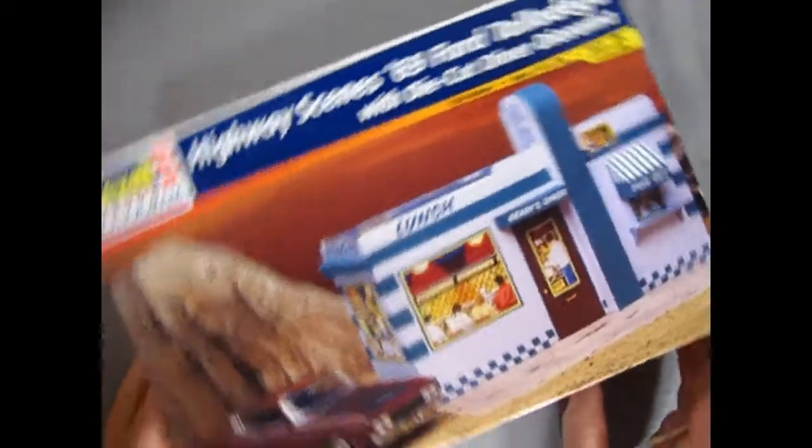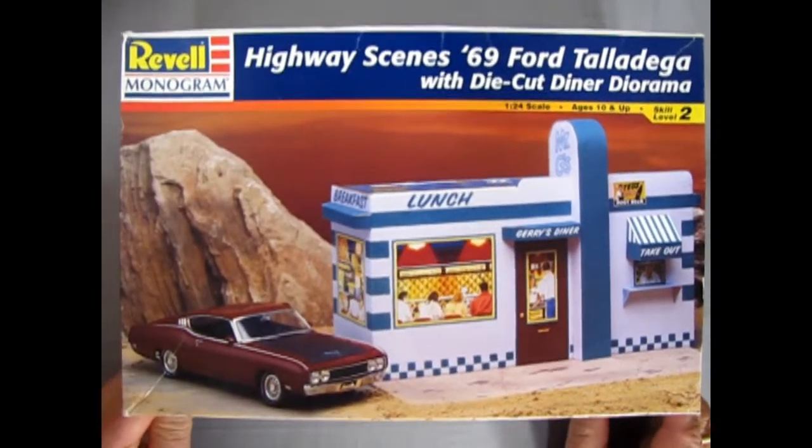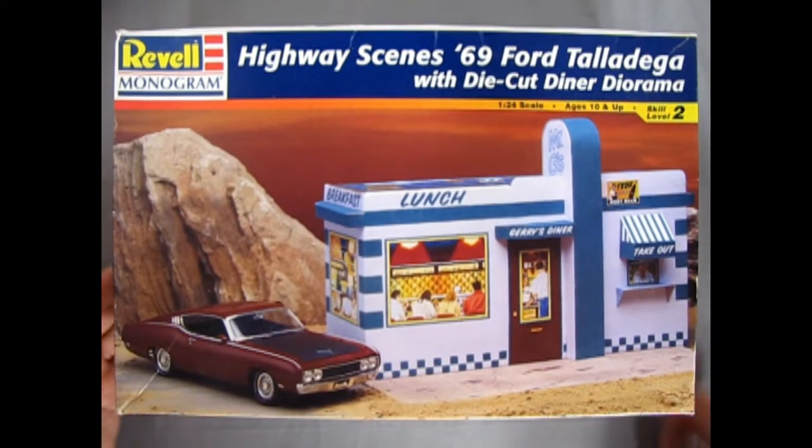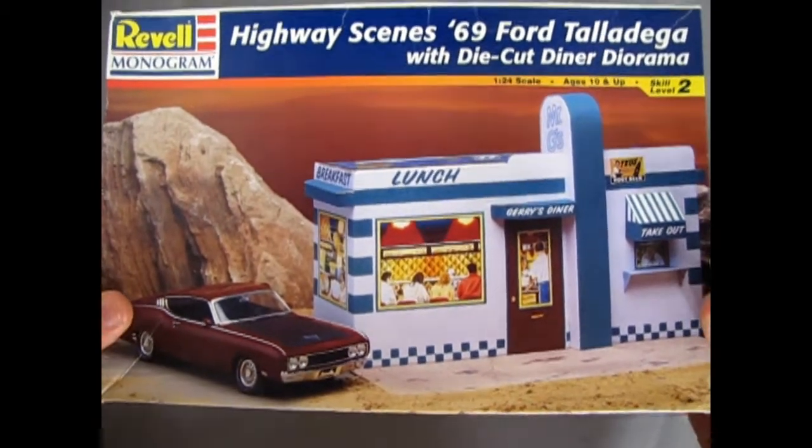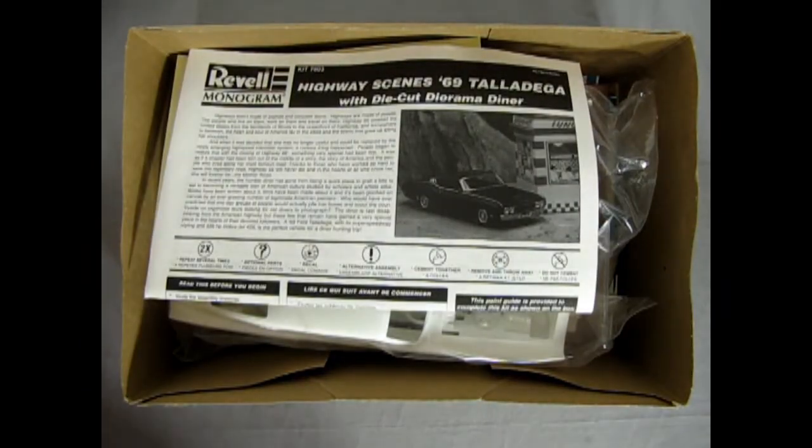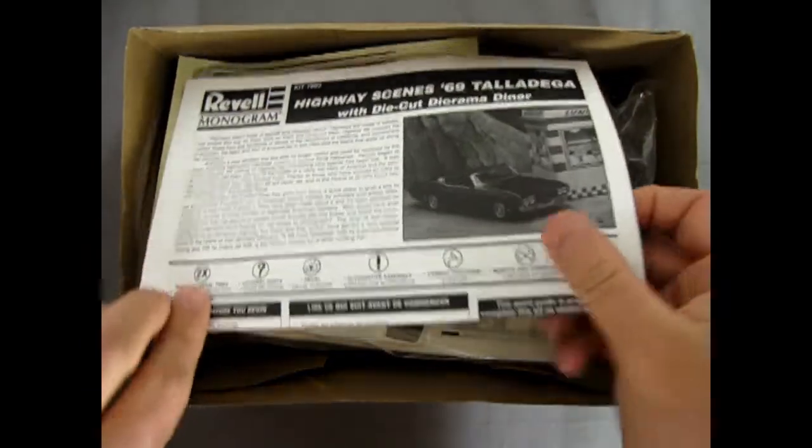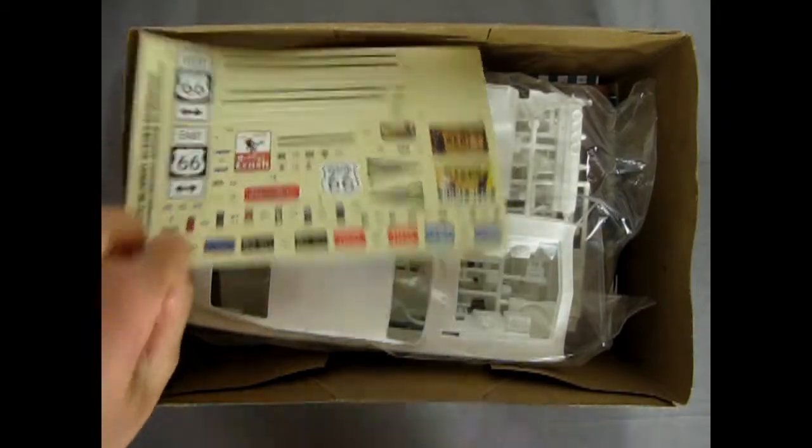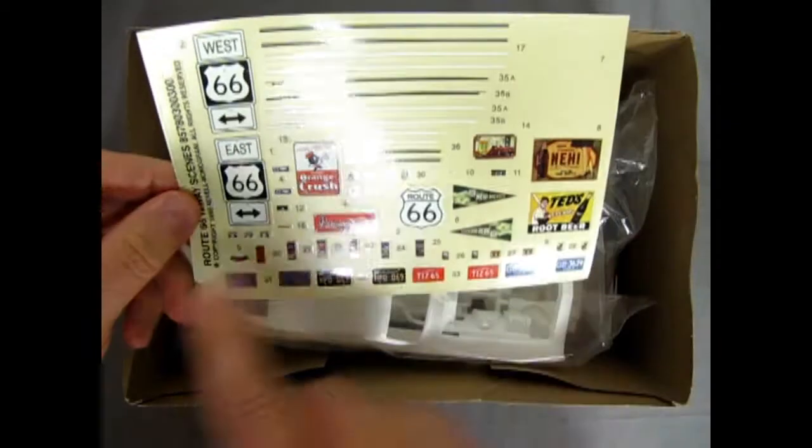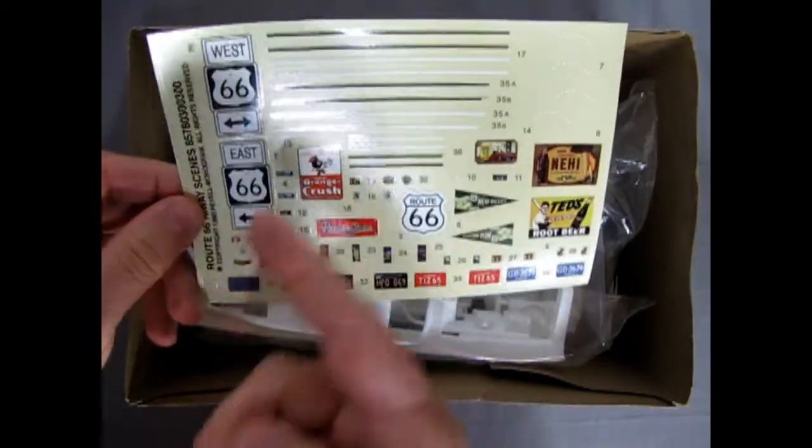So now let's just turn this around a bit. Okay, we're gonna pop the top off this great big monster kit. Now here we get our instructions which is cool, there's those decals with all the road signs and everything, Orange Crush, Route 66.